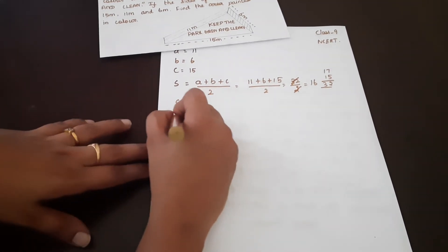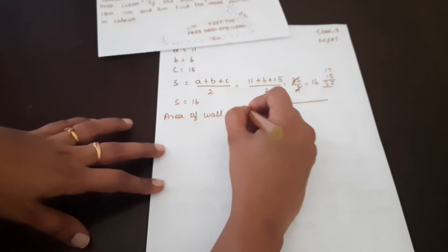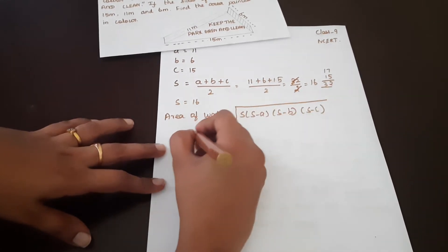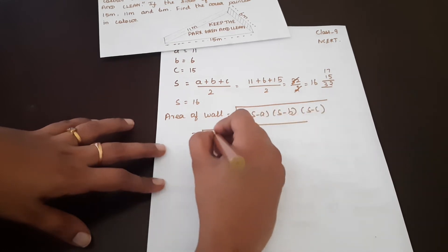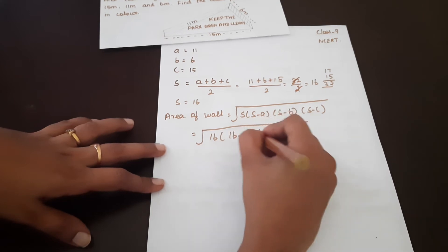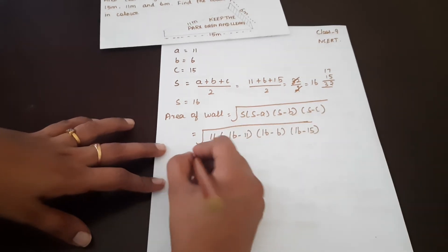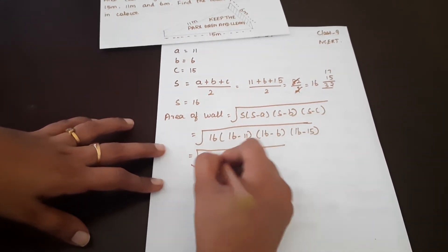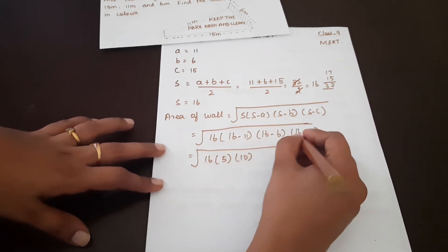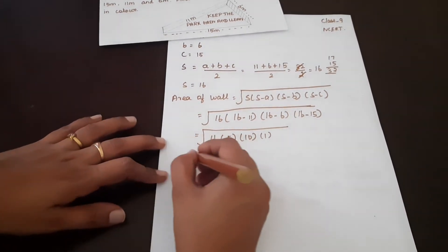The area of the wall is equal to under the root of S times (S minus A) times (S minus B) times (S minus C). So that is 16 minus 11, 16 minus 15, and 16 minus 6.